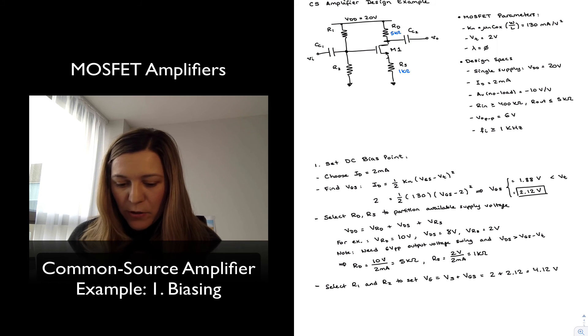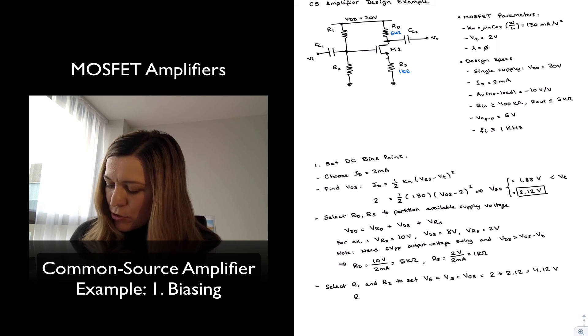So I have R1 over R2 equal to the ratio of the voltage across R1 divided by the voltage across R2, which is VDD minus VG divided by VG minus 0.